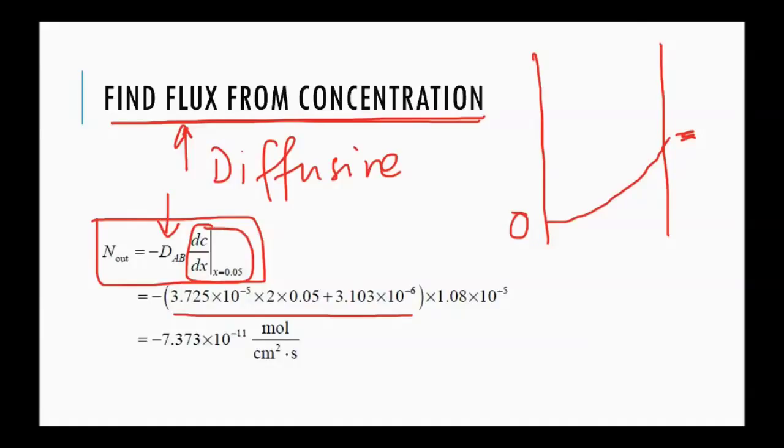And then, this D is the diffusivity that we plug in. So, we get a flux that is equal to this value. Note that it's some mass amount per unit area and per unit time. And you note that the flux we just calculated, it's at x equal to 0.05.